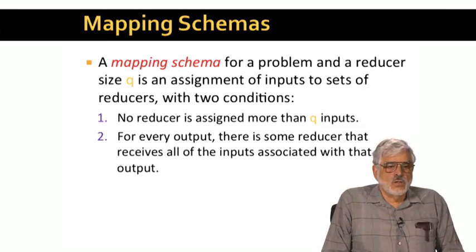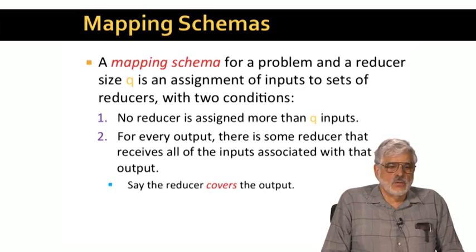But in order for there to be any way of computing the outputs correctly, using this mapping schema, there is another condition that must be satisfied. For each output, there is at least one reducer that is capable of computing the output. In order to compute an output, the reducer must have as inputs all the inputs on which that output depends. When a reducer gets all the inputs an output needs, we'll say the reducer covers that output.